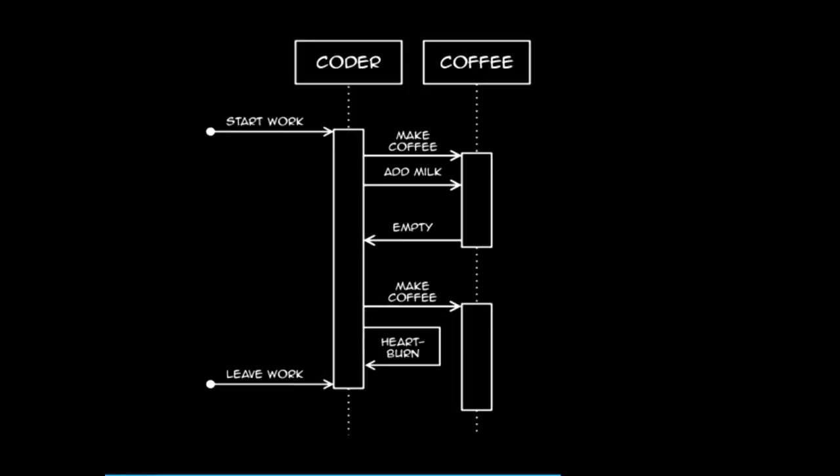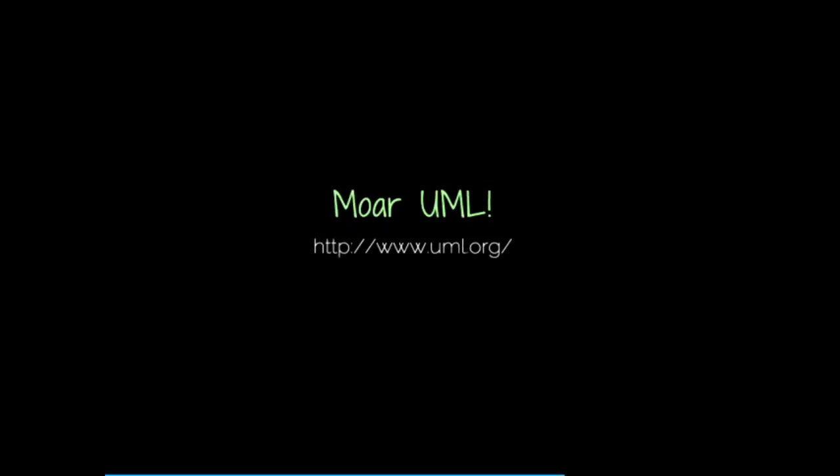There's also something interesting: if you look at this, it doesn't really look like a lot of code. What it actually looks like is a conversation — you can almost imagine two different things talking to each other. These arrows are called messages; they're not just methods, they can even be very general. There's a whole bunch more UML stuff — you can find it at UML.org. Don't spend too much time on it. It will hurt your head.